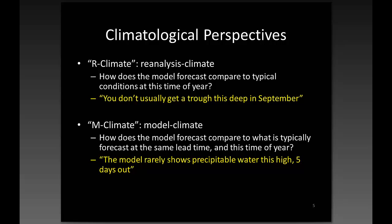One of the first things I want to talk about is a tool we've worked on with the WFO in Salt Lake City. We want to try and put our ensemble forecast into context. The most common approach is what we call R-climate — reanalysis climate — where we're comparing the model forecast to a reanalysis of typical conditions at this time of year, so you get a takeaway like, 'you don't usually get a trough this deep in September.' An alternative is M-climate, or model climate, where we ask how the model forecast compares to what is typically forecast at the same lead time and time of year — for example, how often do you see this much QPF in the GEFS ensemble at day five or day six?